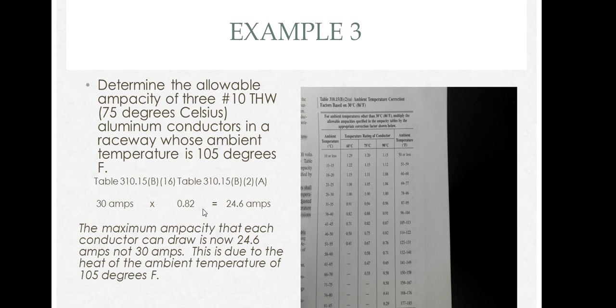We simply multiply that 0.82 factor to 30 amps. Now our conductors can only carry 24.6 amps. This is due to the increase in temperature of the raceway.